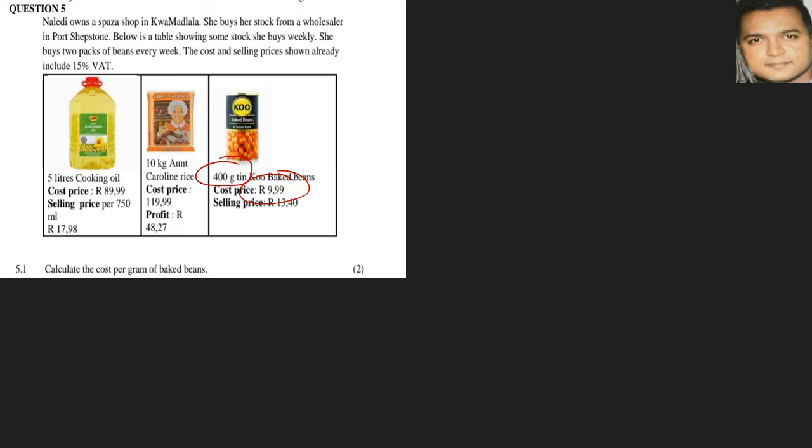So we take our cost which is 9.99 and we divide it by 400 grams, and it would be 0.02475. Now remember it's money, so we round off to two decimal places, and the answer would be 2 cents per gram.